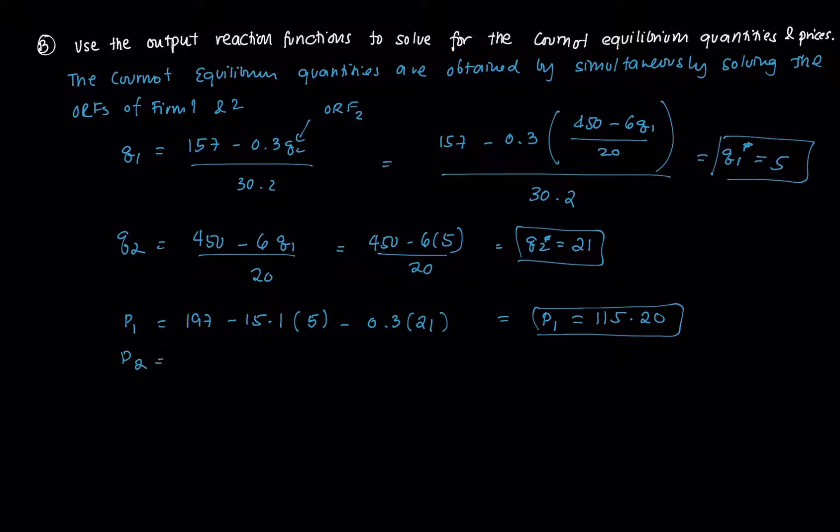The same is true for P2. That's 490 minus 10 times Q2, which is 21, minus 6 times Q1, which is 5. We get P2 equals 250.